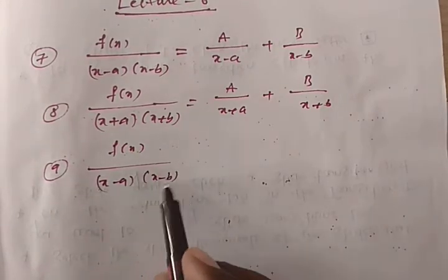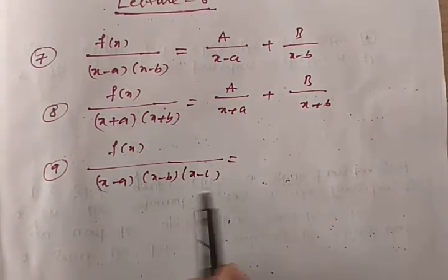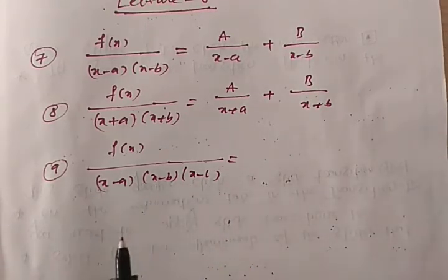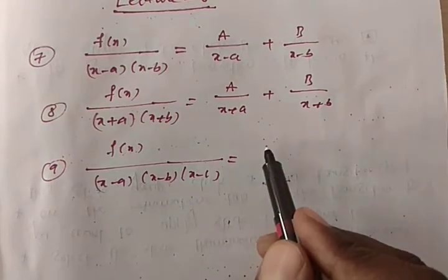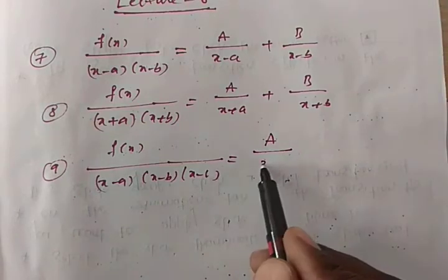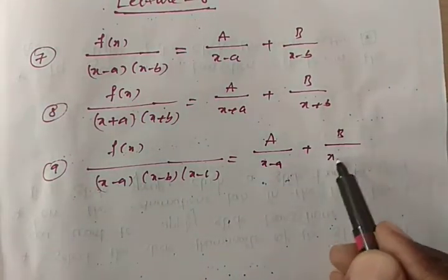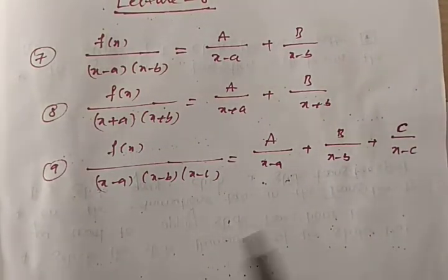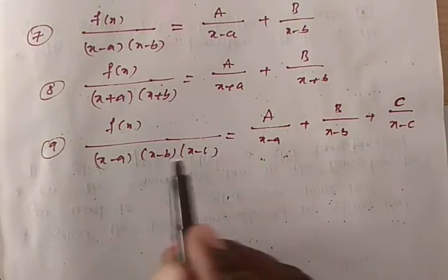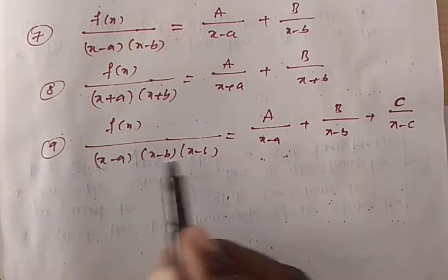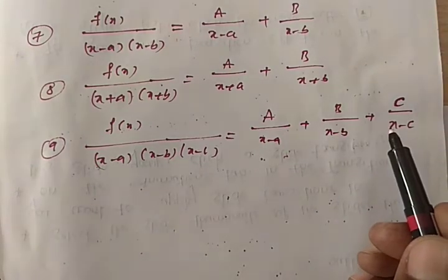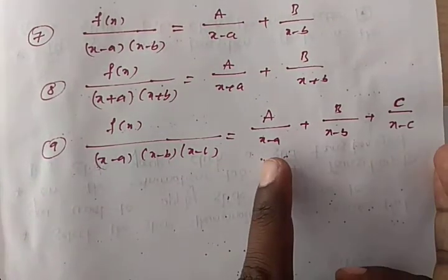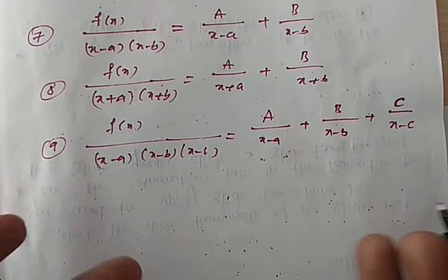Now consider f(x) divided by (x minus a)(x minus b)(x minus c). Here the denominator contains a product of three distinct linear factors, so we divide it as A by (x minus a) plus B by (x minus b) plus C by (x minus c). We are expressing one big fraction as an algebraic sum of three simple fractions — that is our aim.